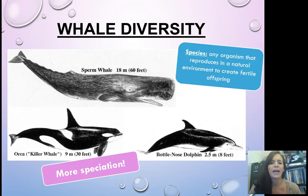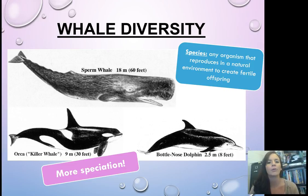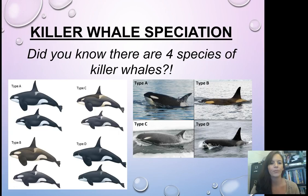Another slide of a little bit of diversity. So we have a sperm whale, a killer whale, and a bottlenose dolphin. So this is just more speciation examples. Species is defined as any organism that reproduces in a natural environment but still has fertile offspring.